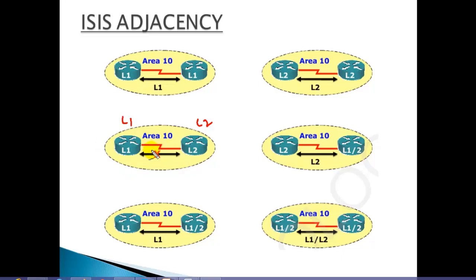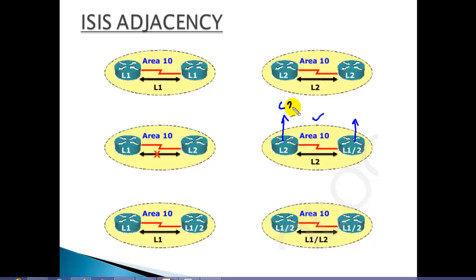We need to identify which configurations or which levels match and which do not. If you configure Level 2 and Level 1/Level 2, this is going to work because they are in the same area. Level 1/Level 2 supports both Level 1 and Level 2, so they both exchange routes based on Level 2 information.